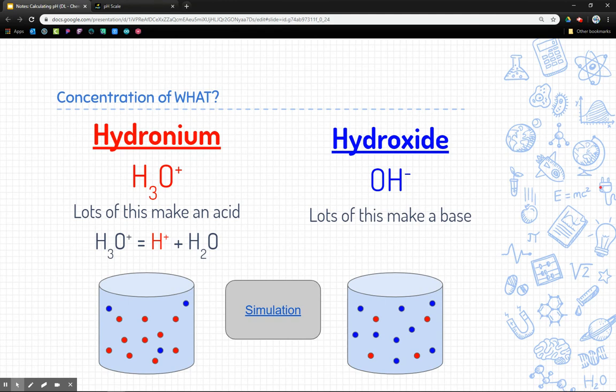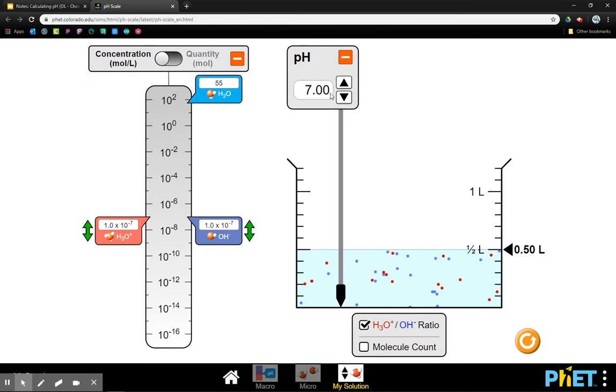But the concentration of what? Well, we have hydronium, which is H3O+, and hydroxide, which is OH-. These are different polyatomic ions that we'll see dissolved in these solutions. Now, if there's a lot more hydronium, then it's more of an acidic solution. And if there's a lot more of hydroxide, it's more of a basic solution.